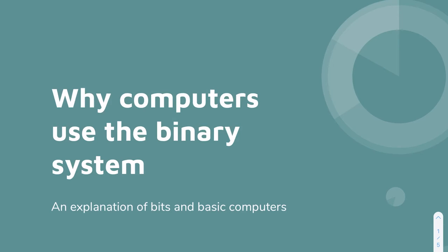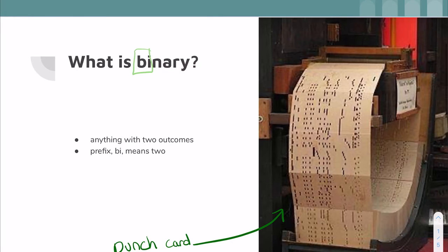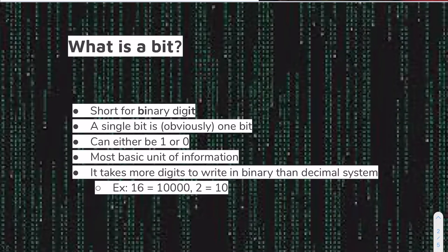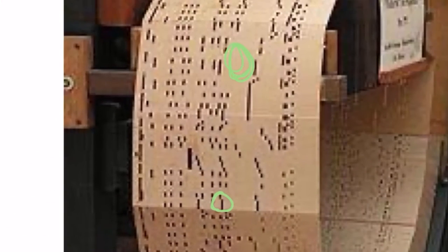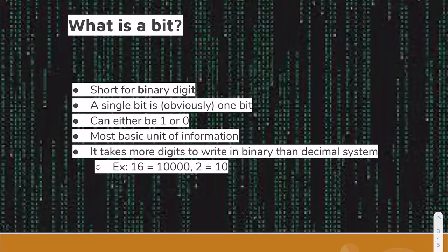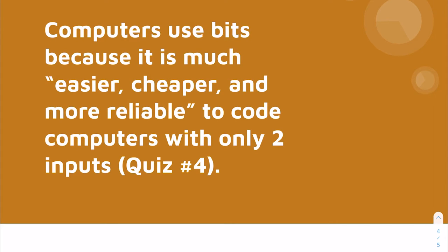Why do computers use the binary system? Binary — as you can see with the prefix "bi" — is anything with two outcomes. A bit is short for binary digit; it can either be a one or a zero, also known as on and off. It is the most basic unit of information, and it takes more digits to write in binary than in the decimal system.